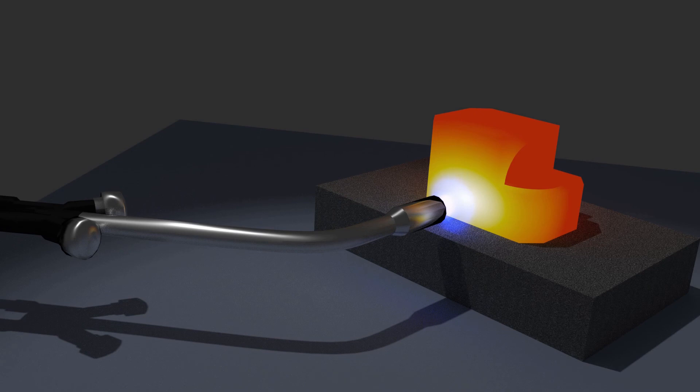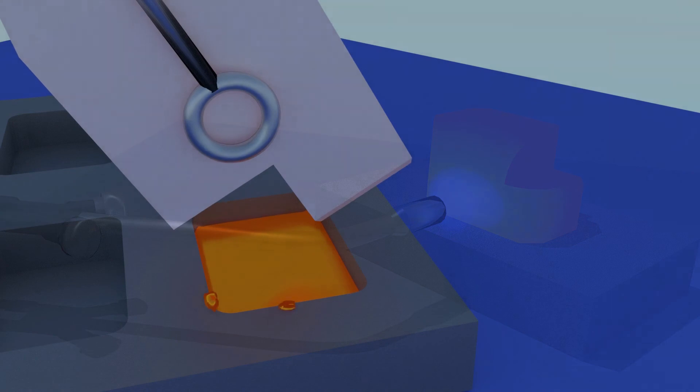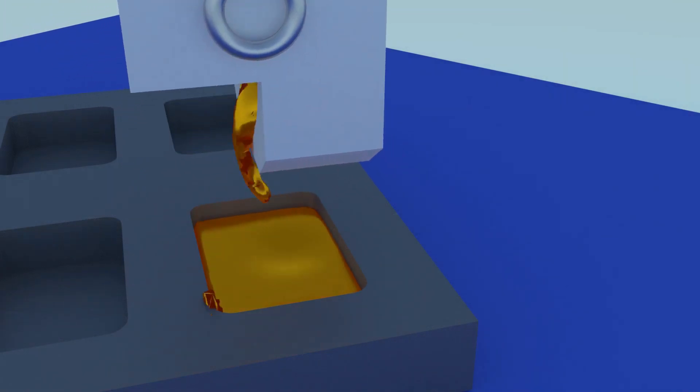Melt your metal. When it flows like water, pour it into an ingot mold to make a bar of gold, or pour it into ice water to make shot.